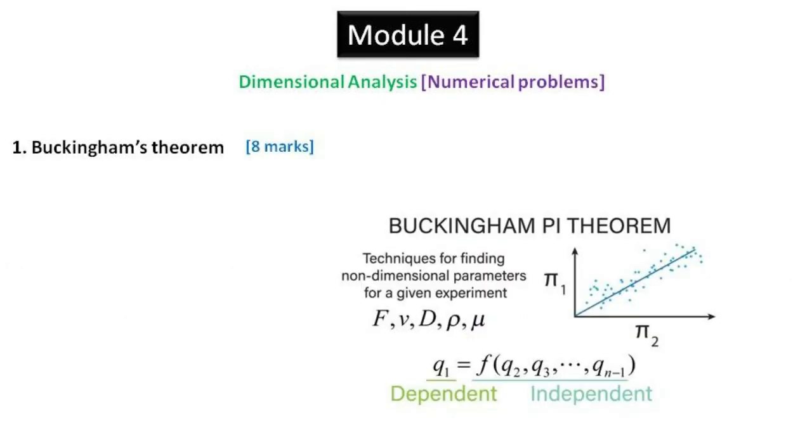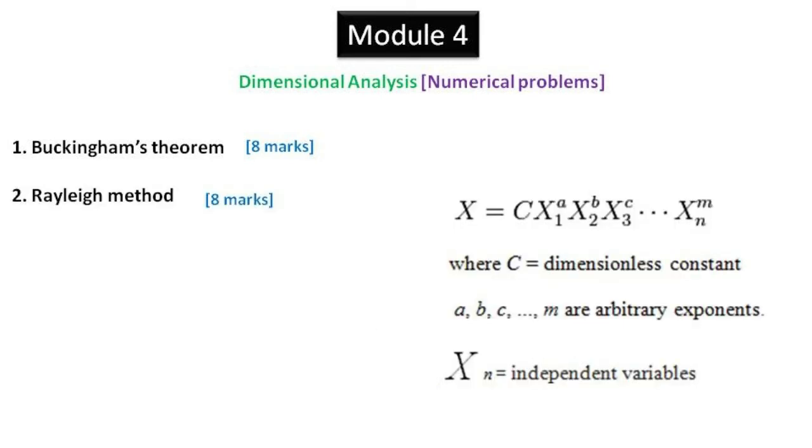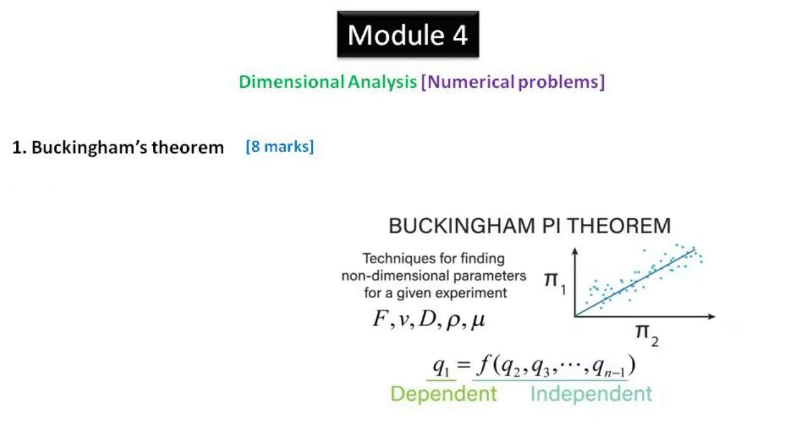Under numerical problems, the problem will be asked mostly from Buckingham's pi theorem rather than from Rayleigh method, since Rayleigh method limitation is it is restricted to only three variables for manual calculation and cannot be asked for more marks with more variables. A single problem on Buckingham pi theorem will be asked for 10 to 12 marks in many cases.